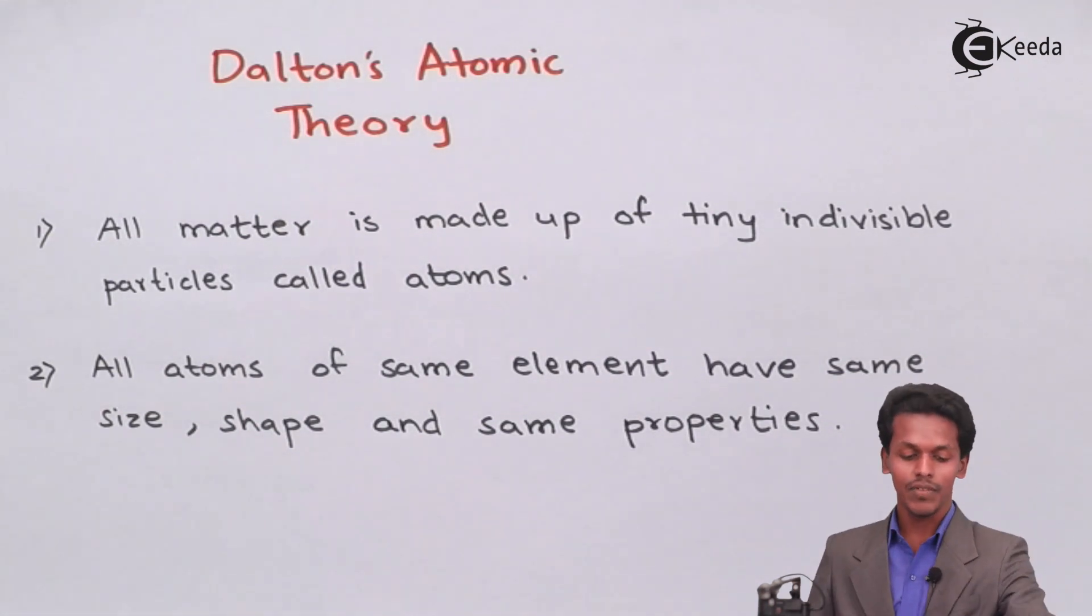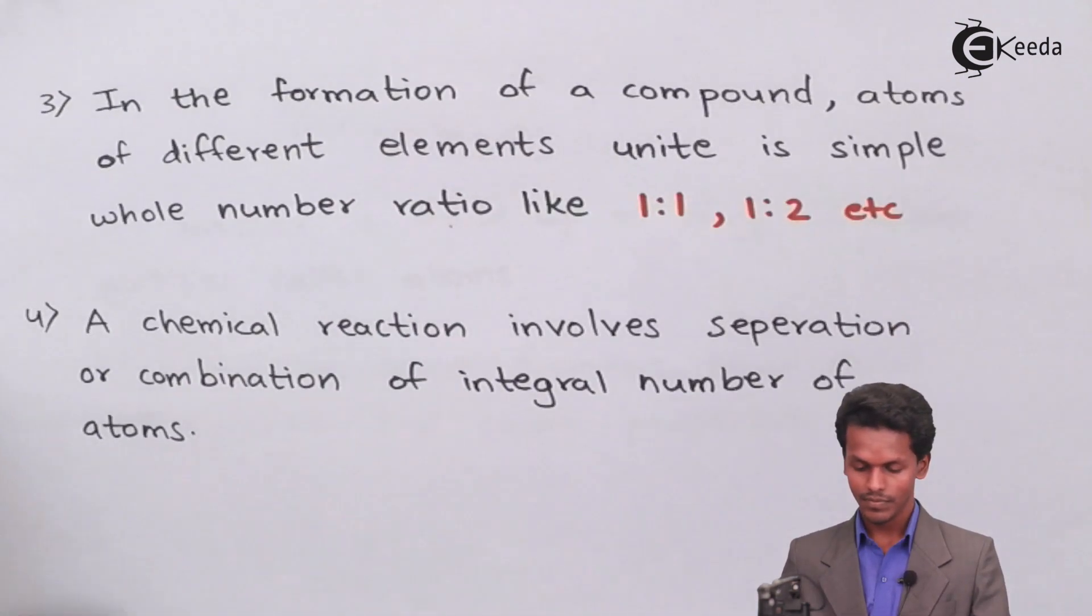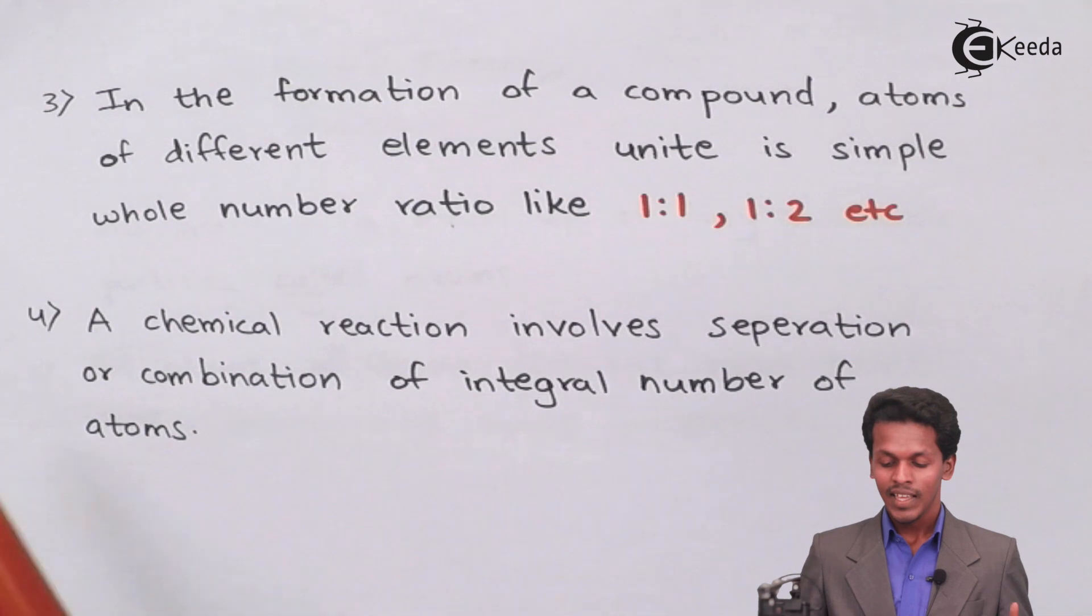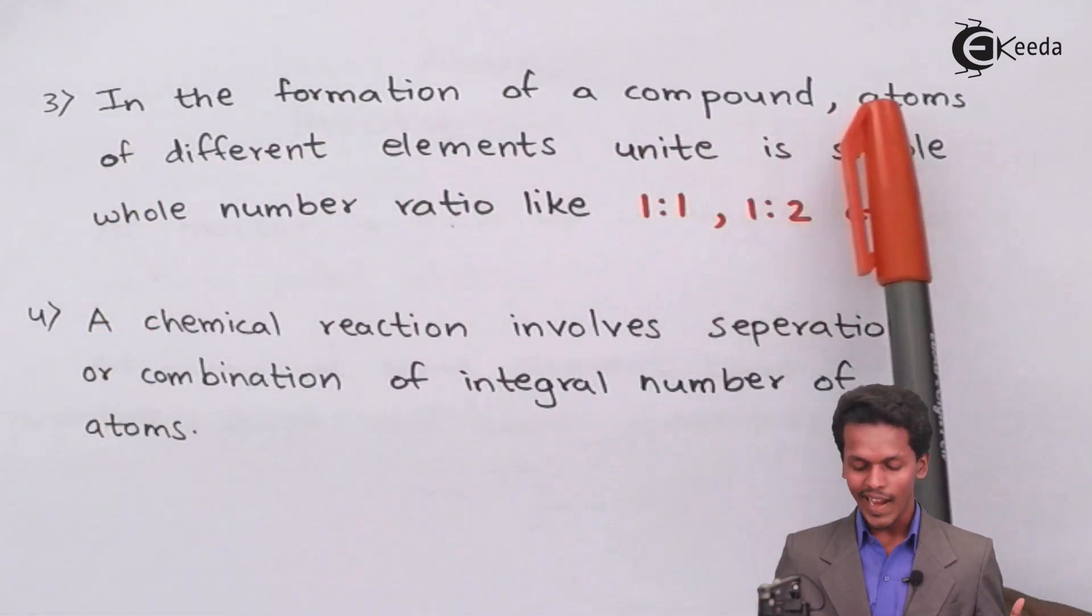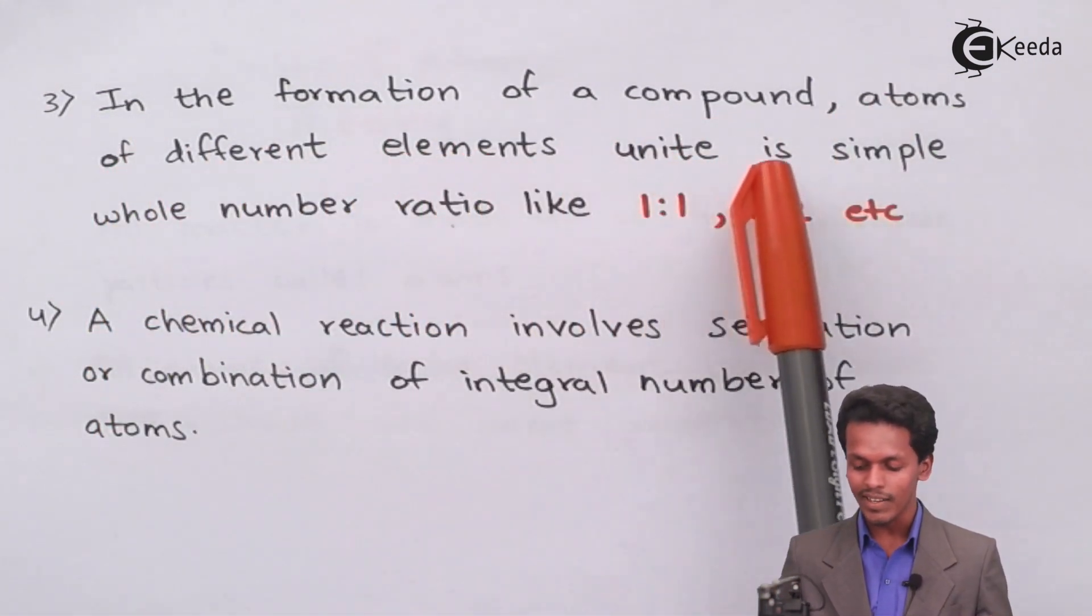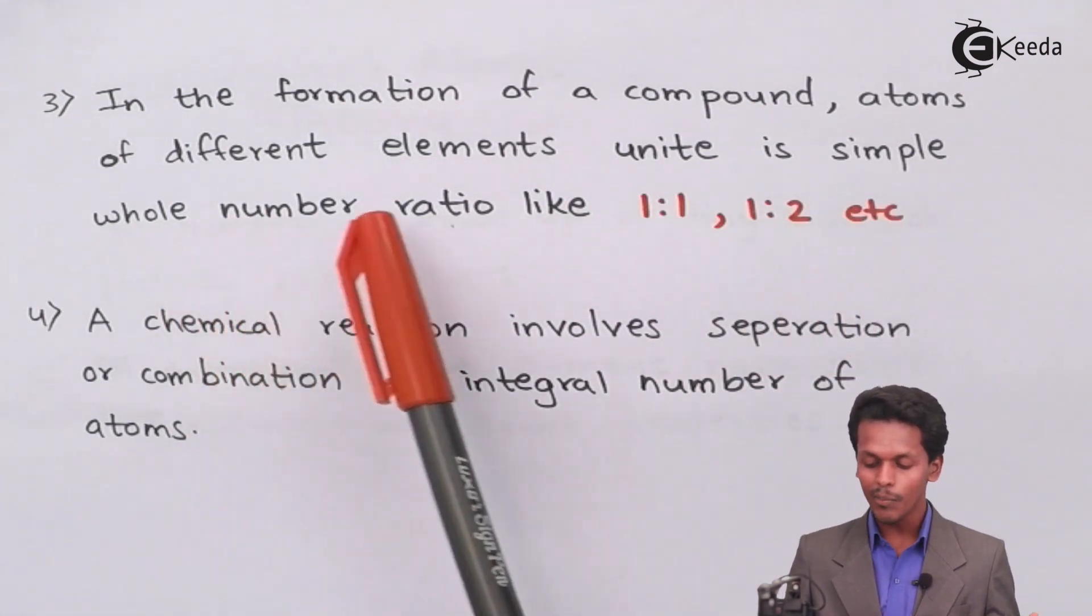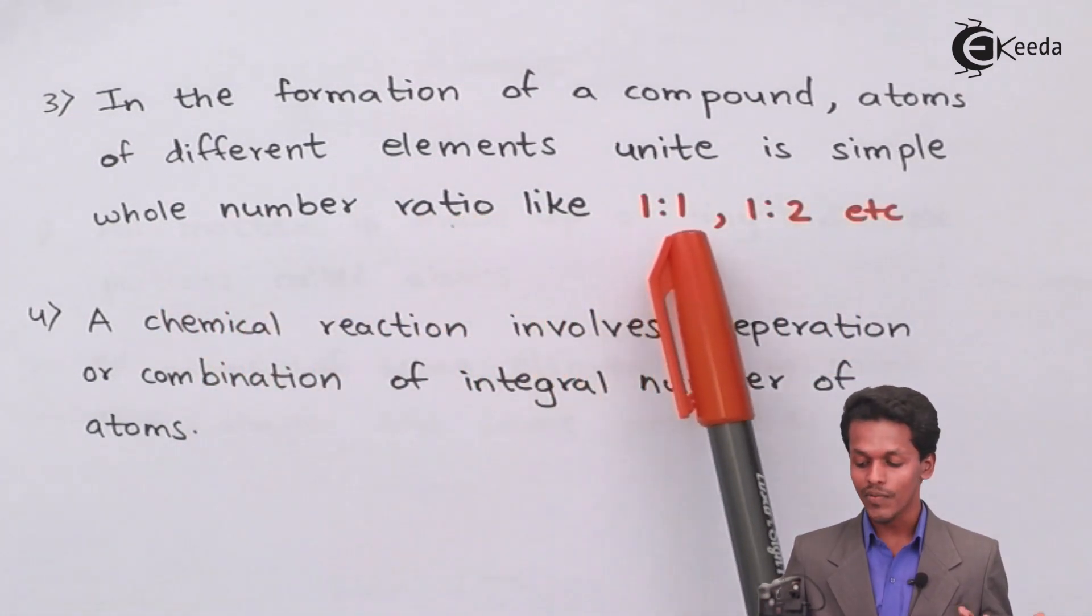Now moving towards the next theory: in the formation of a compound, atoms of different elements unite in simple whole number ratio like 1:1, 1:2, etc.